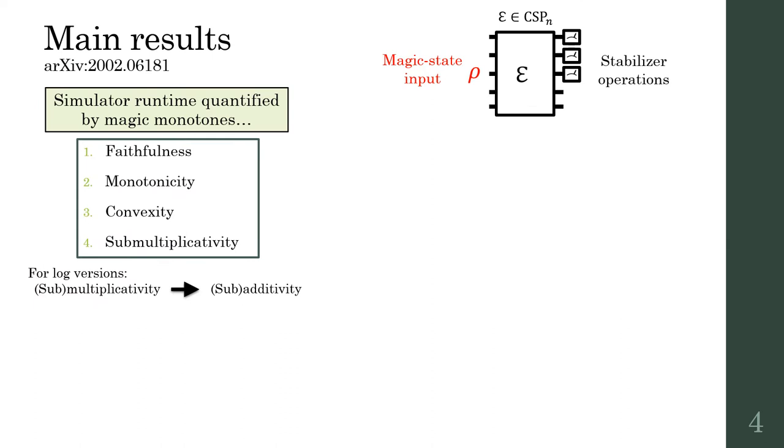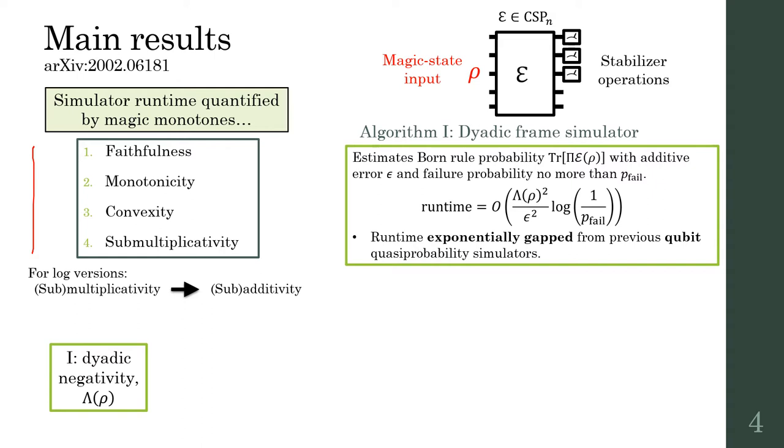I will now summarize the main results before discussing them in more detail. The monotones we study all have standard resource-theoretic properties. The first simulator we introduce is the dyadic frame simulator, descended from quasi-probability methods, which allows classical estimation of Born rule probabilities up to additive error in runtime that scales with a monotone called dyadic negativity.